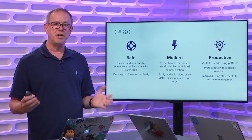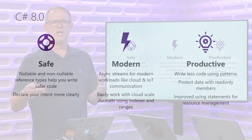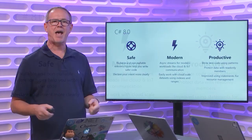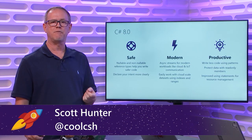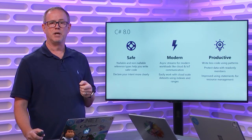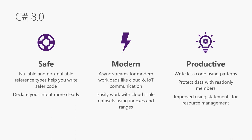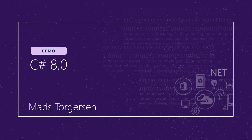C# 8 has a bunch of new features broken into buckets. First, safety: new nullable features help you catch errors early or prevent them from occurring. Second, modern: C# 8 includes async streams, which we'll demonstrate shortly. Third, productive: C# aims to add the right features to let you write code faster with less code on screen — all tooled with the Visual Studio family. Next, Mads comes on stage to show async streams using Glenn's demo.